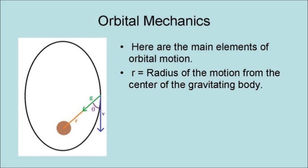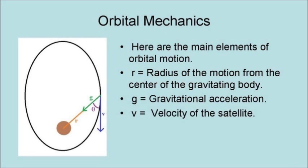Here are the main elements of orbital motion. R is the radius of motion from the center of mass of the gravitating body. G is the gravitational acceleration. V is the velocity of the satellite. And theta is the angle of the velocity to the radius.